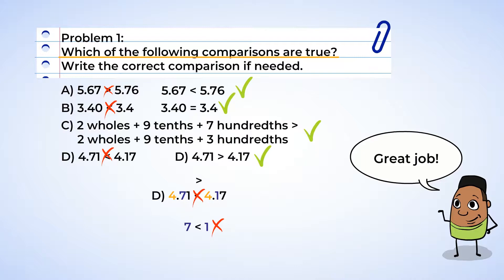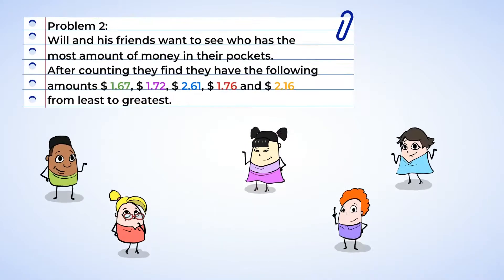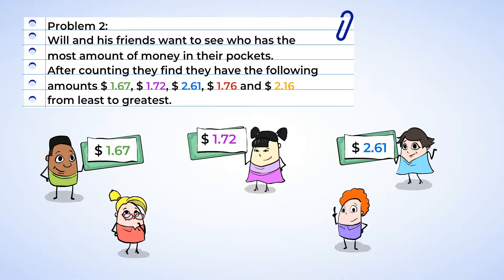Now it's time to put some numbers in order. Problem 2. Order from least to greatest. Oh, I bet Will and his friends wanted to see who has the most amount of money in their pockets. And after counting, they found that they had the following amounts. Will had $1.67. Sue, $1.72. Mia, $2.61. Jenny, $1.76. And Eric, $2.16. And now we are gonna organize them from least to greatest.